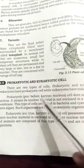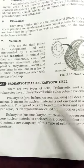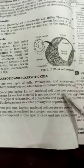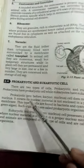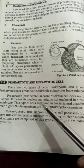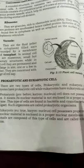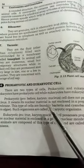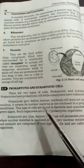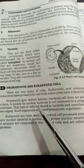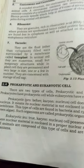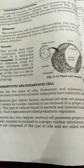Pro means before, karyons means nucleus, so prokaryotic cells do not possess a true nucleus. The nuclear material is not enclosed in a proper nuclear membrane, so no proper nucleus is available. That is why they are called prokaryotic cells. This type of prokaryotic cells are found in bacteria and cyanobacteria. Such organisms are called prokaryotic organisms.